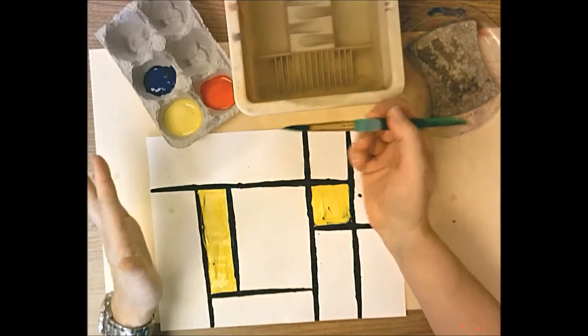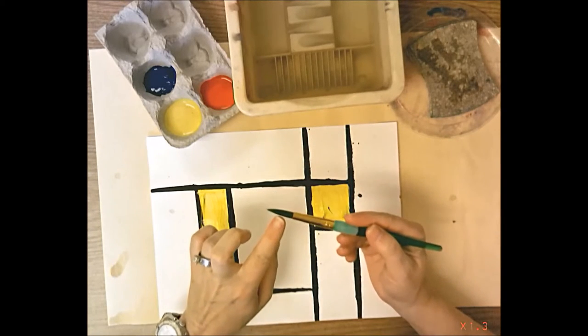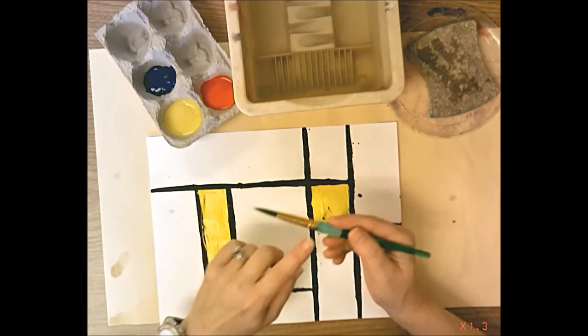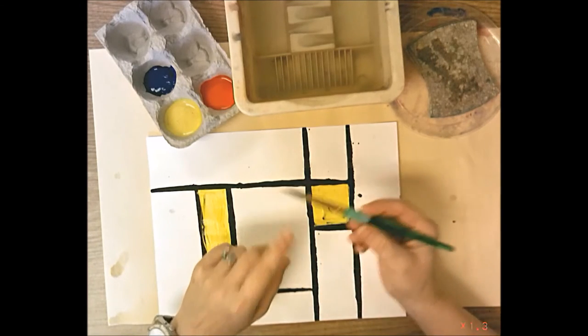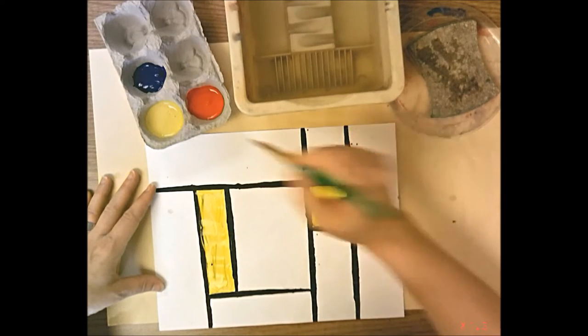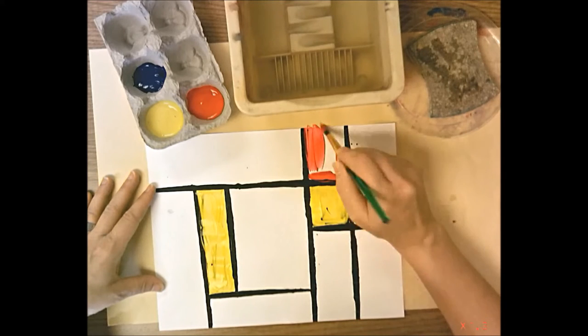Now I'm going to dip into red or blue next, it doesn't matter. Remember last time when we painted our black lines, I asked you only to get paint halfway up the bristle part, halfway up the hairy part. That's the same today. You shouldn't have paint all over the metal part of your paint brush. I'm going to paint one box red and then I'll paint two boxes blue and that will make my five boxes.